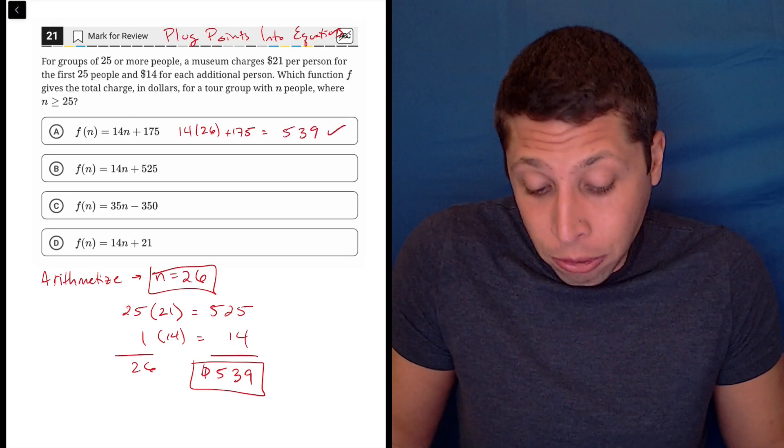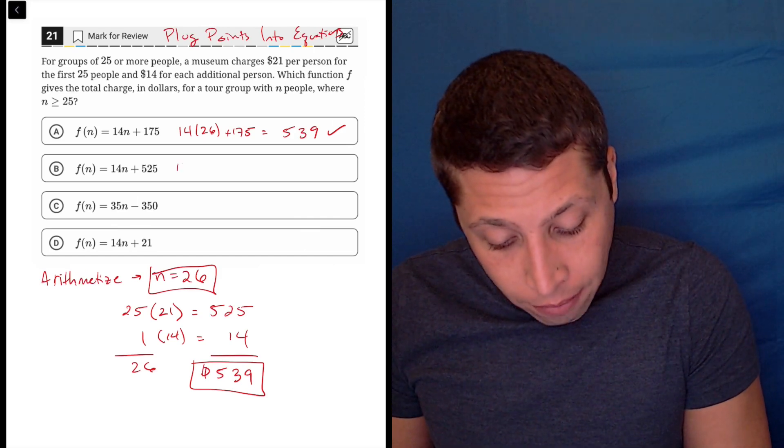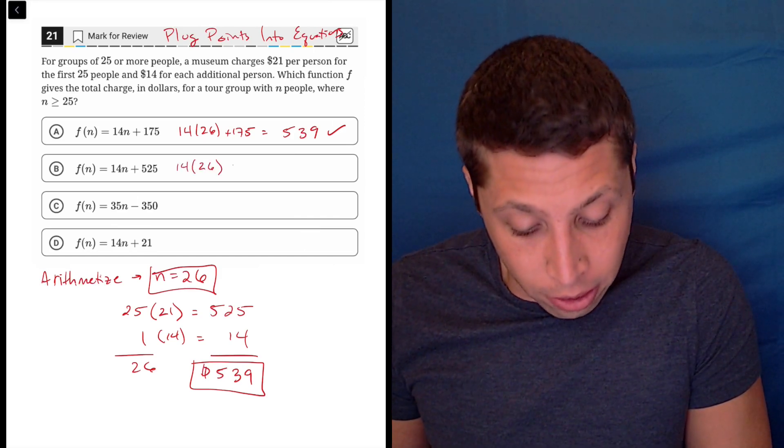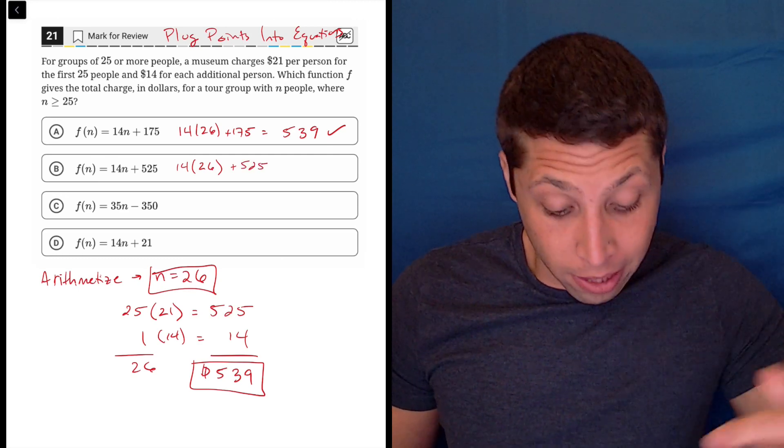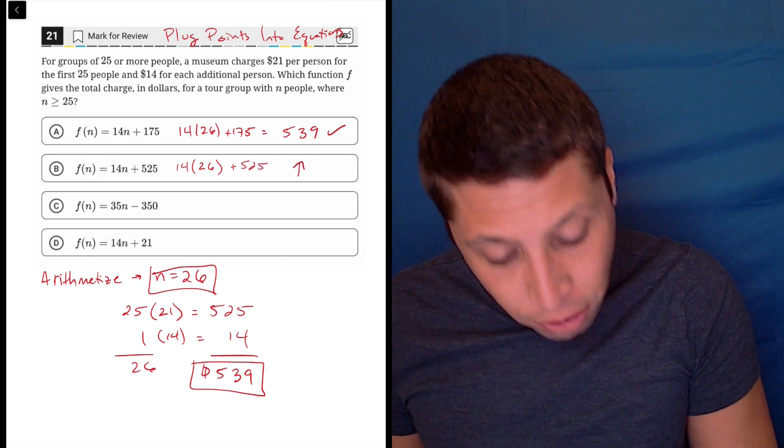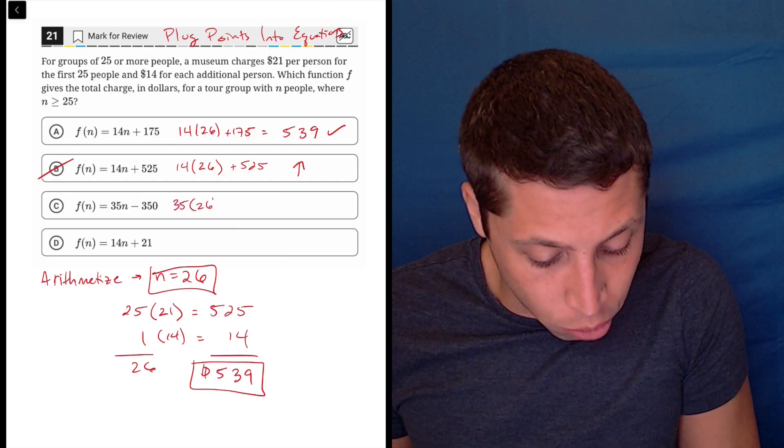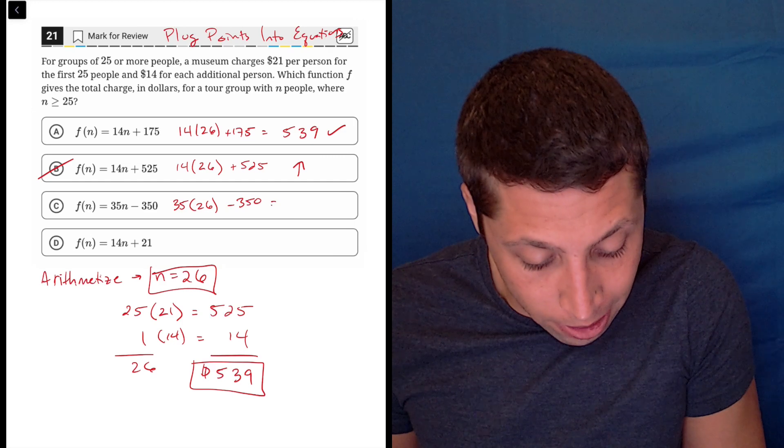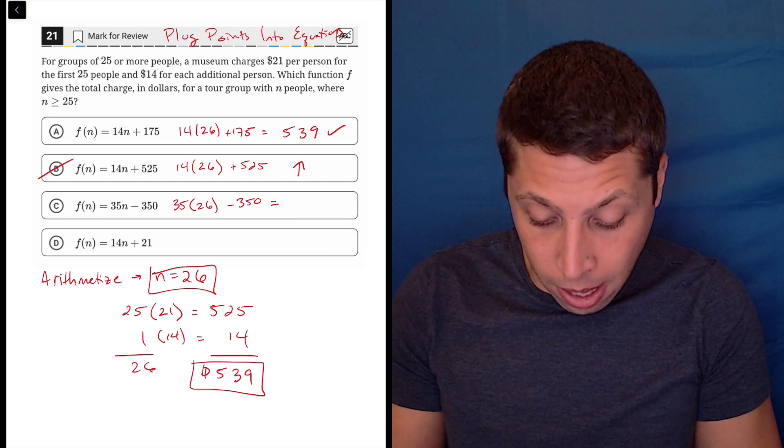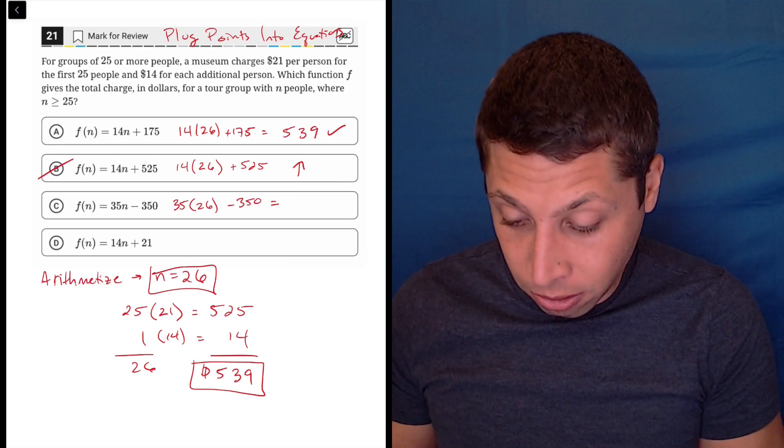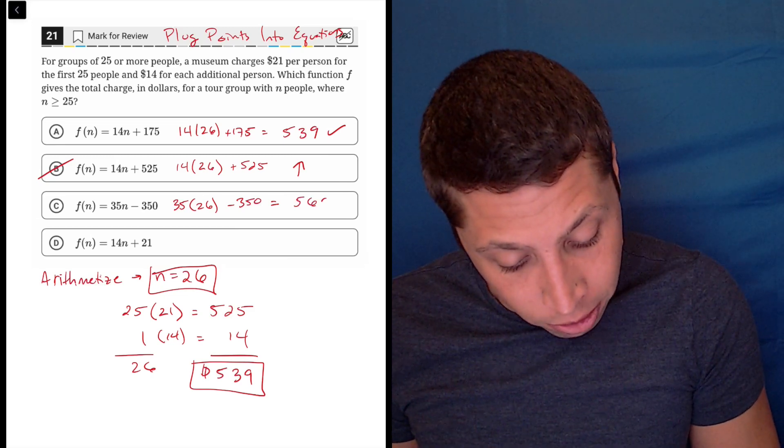Okay, that might be the answer. I don't know yet, I've got to try everything else. I can already see that choice B isn't going to work because 14 times 26 plus even a bigger number is going to be way too big. So that's not going to work. But let's try 35 times 26 minus 350. 35 times 26 is 910 minus 350 is 560, too much money.